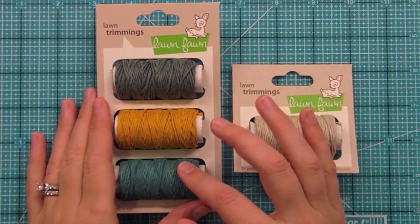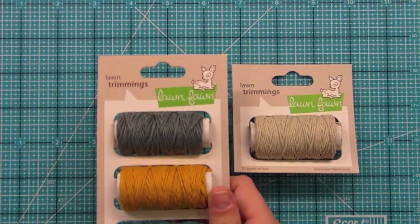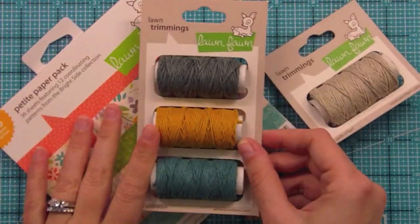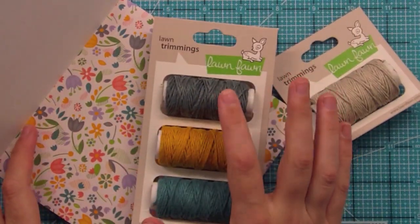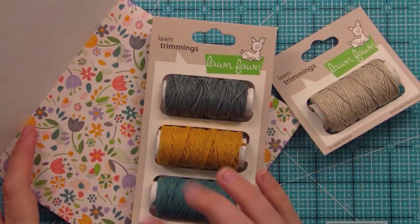We have this triple pack that has these three different colors that actually coordinate with our bright side paper line. So you can see how well these match, especially with this paper here that has all of the colors. We have the charcoal gray, the goldenrod yellow, and the teal.